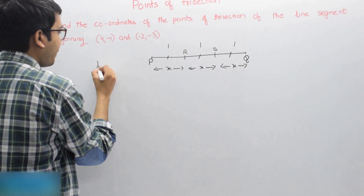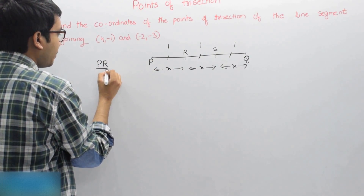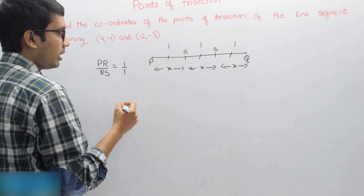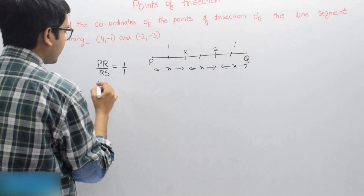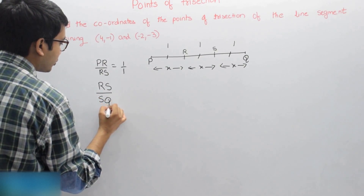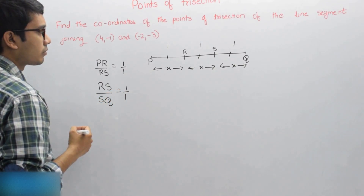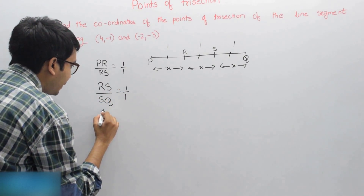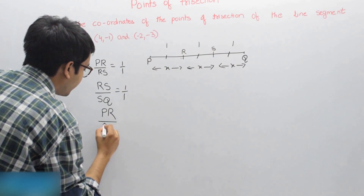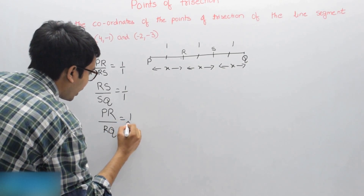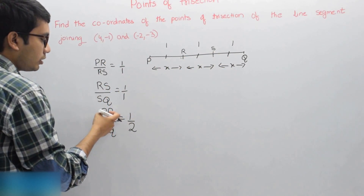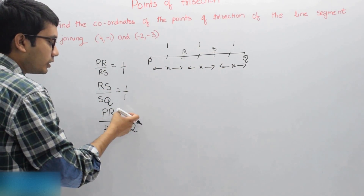That means PR by RS is equal to 1 by 1, and the ratio of RS by SQ will also be equal to 1 by 1. One more thing: PR by RQ will be 1 by 2, because RQ is two parts and PR is one part. So PR by RQ is equal to 1 by 2.